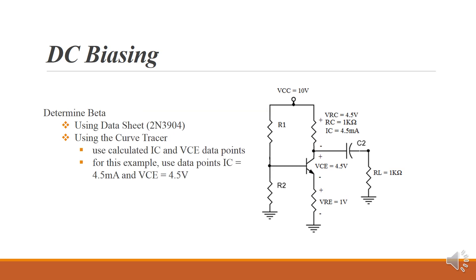Now let's determine the beta for the transistor. There's a couple different ways you can do this. You can simply go to the datasheet for the transistor that you have. We use a lot of 2N3904s here.